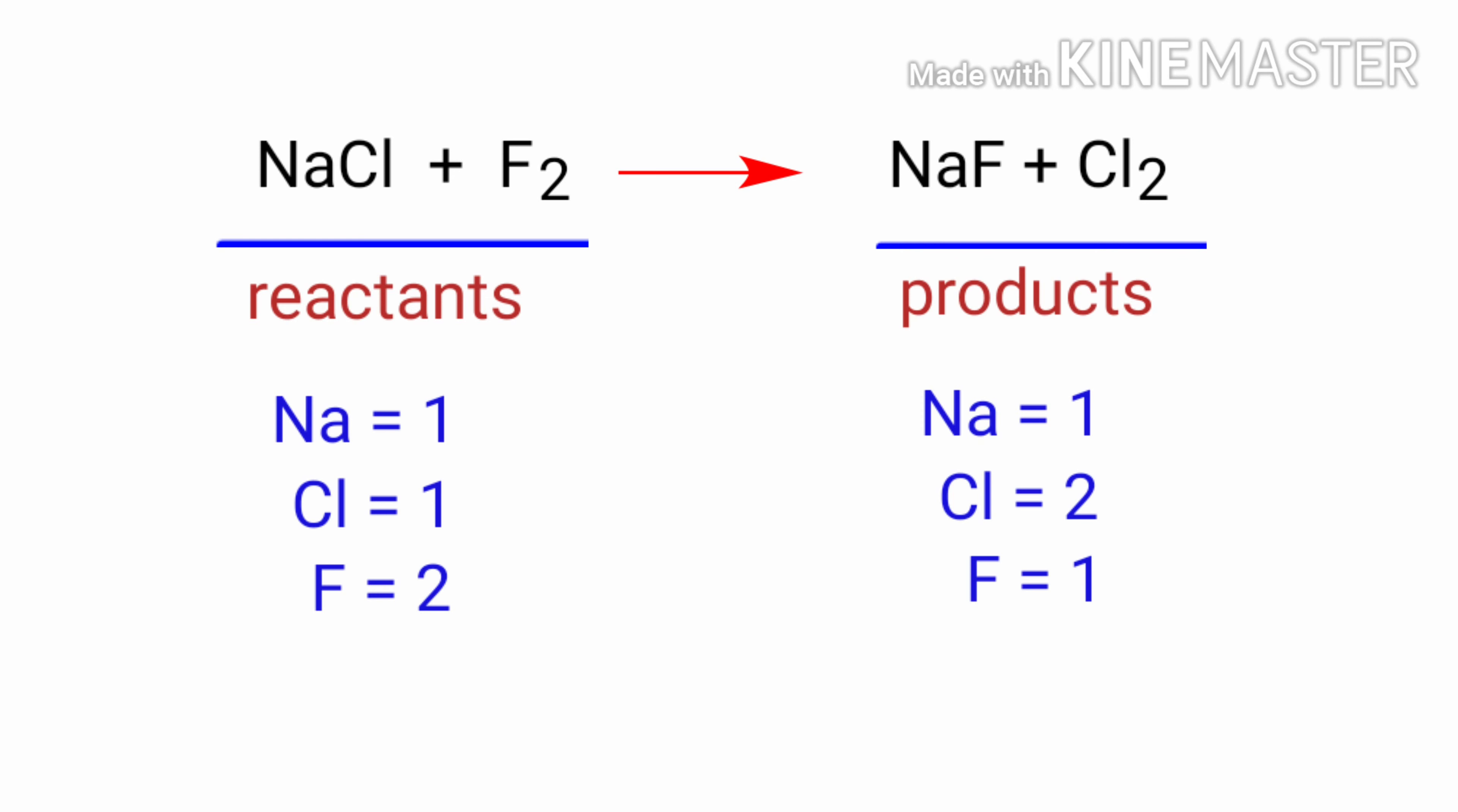To balance the chemical equation, we need to make use of coefficients. A coefficient is a number that we place in front of a chemical formula.